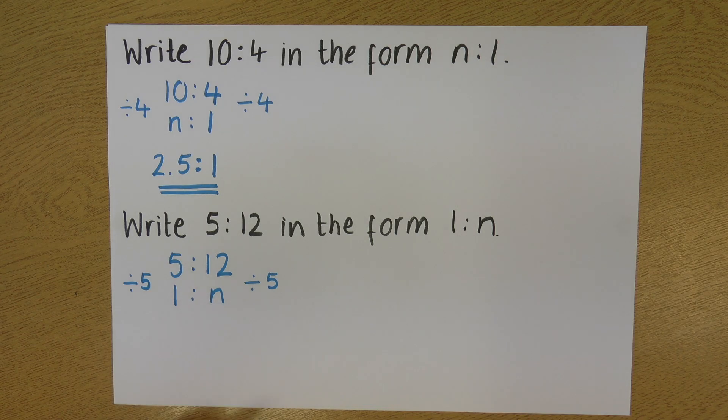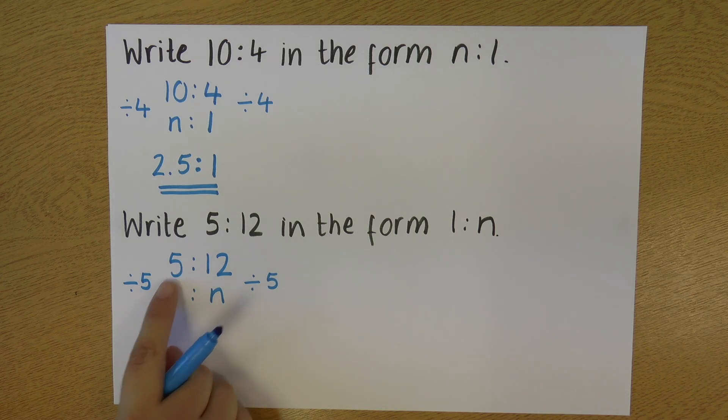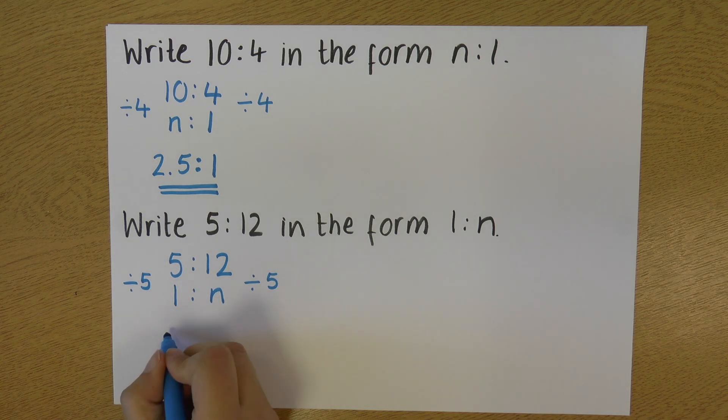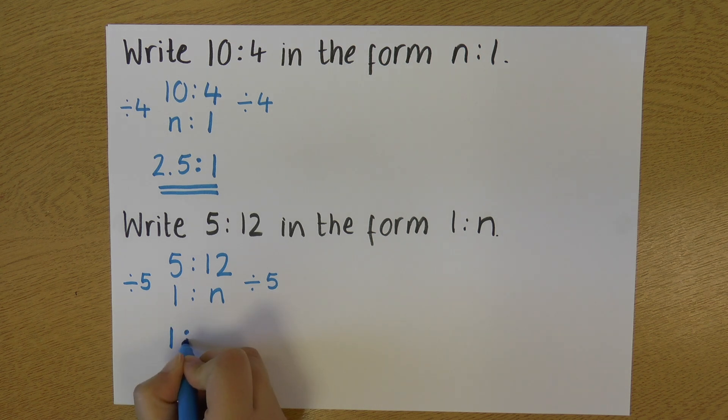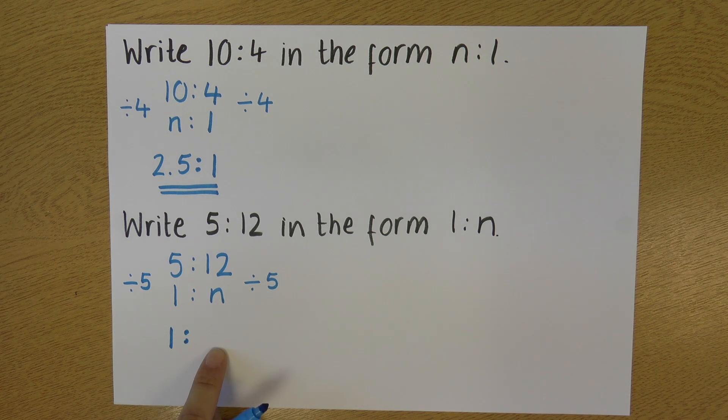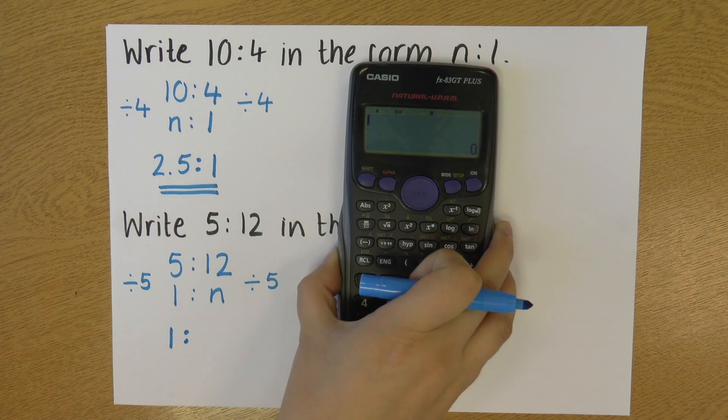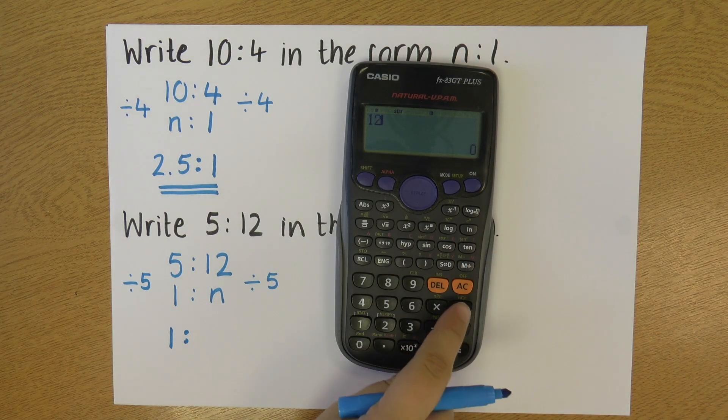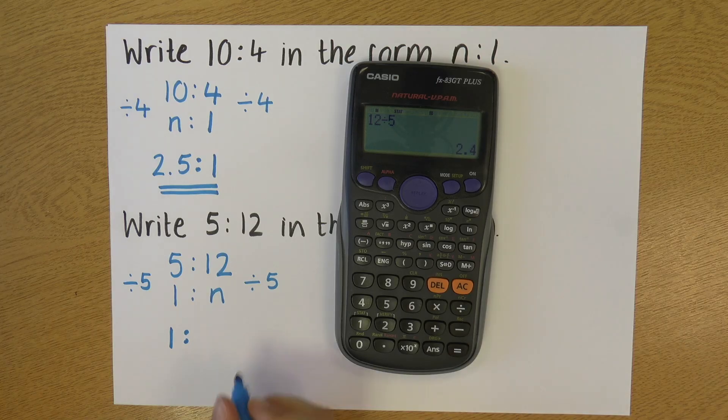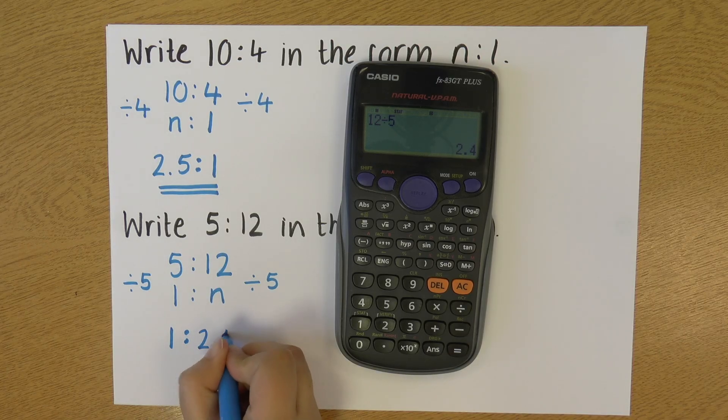So let's look at what we get. Over here, we've got 5 divided by 5, which is 1. On the right hand side, I have 12 divided by 5, which I'm just going to pop quickly into this calculator. 12 divided by 5, and that's 2.4.